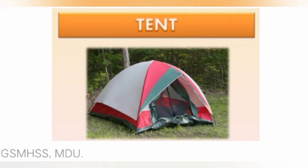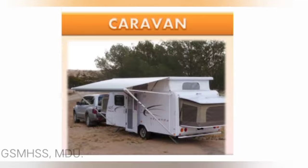People who move from place to place live in tent houses. Caravan houses are for people who travel a lot from one place to another. A caravan moves on wheels and is sometimes drawn by a horse.